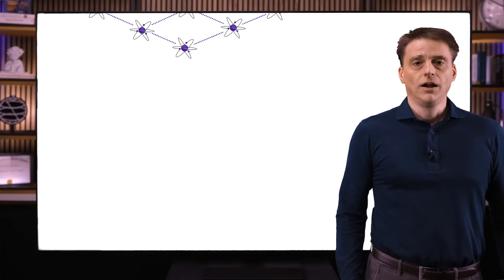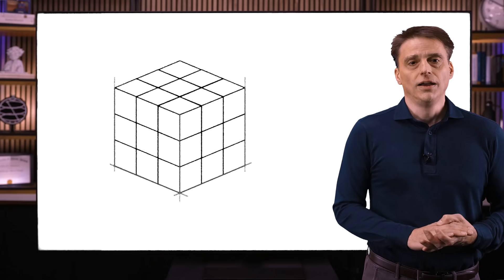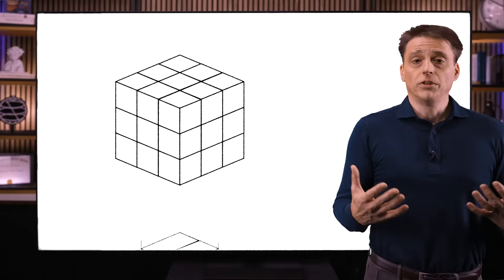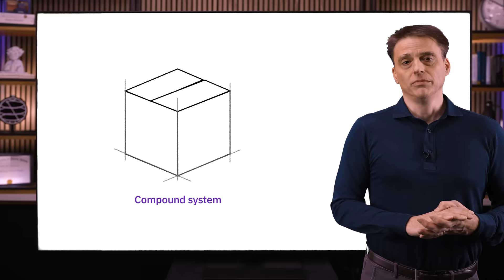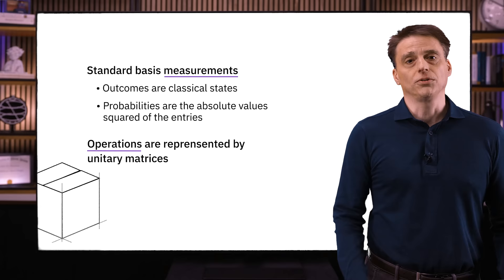There is a simple principle that offers us quite a lot of traction for thinking about and understanding quantum information from multiple systems — that we can always take two or more systems and put them together, or just conceptually think about them together, and view them as if they form a single compound system. When we think about a compound system like this as if it's a single system, we recognize that it must be described in a way that's consistent with everything we learned in the previous lesson on single systems. We'll see how the description of quantum information from multiple systems emerges pretty naturally from how it works for single systems, based on this one principle.